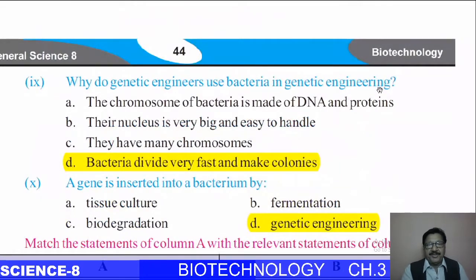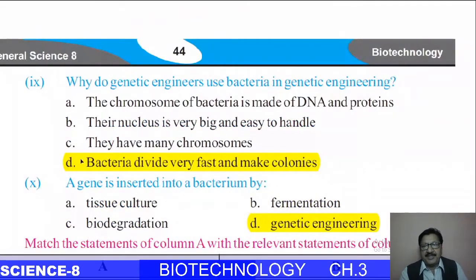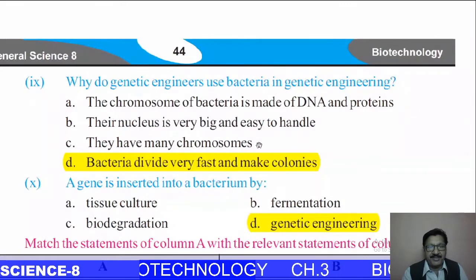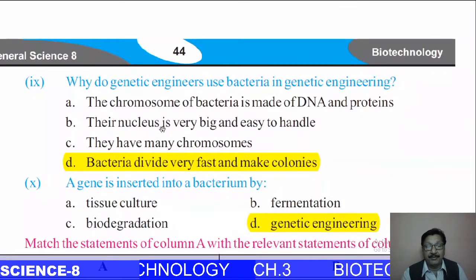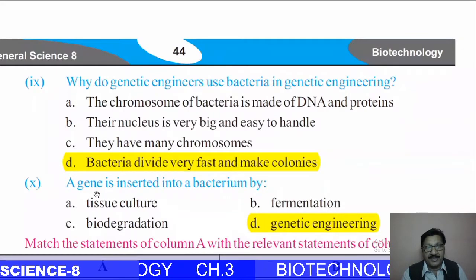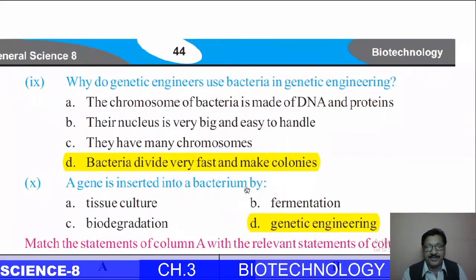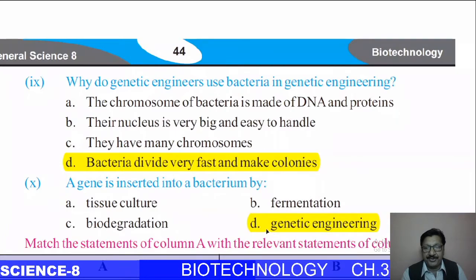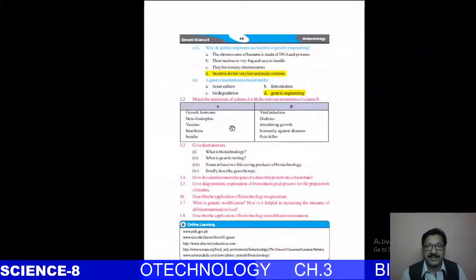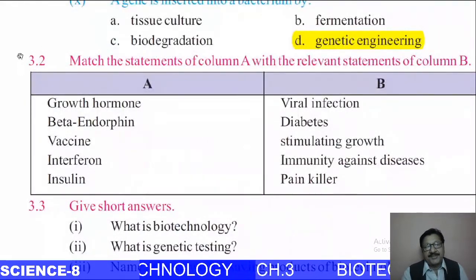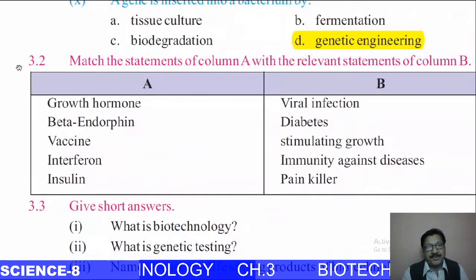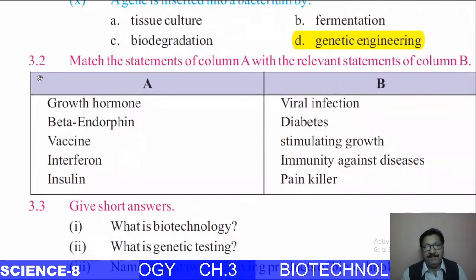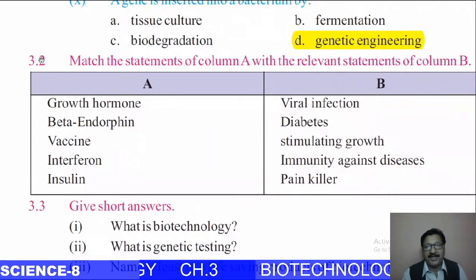Moving to page 44: Why do genetic engineers use bacteria in genetic engineering? The correct answer is that bacteria divide very fast and make colonies — that option is correct. Next question: a gene is inserted into a bacterium by genetic engineering — the correct answer is genetic engineering.